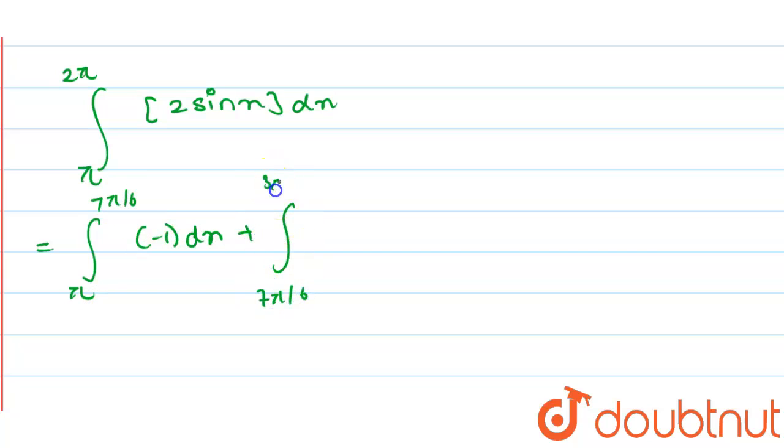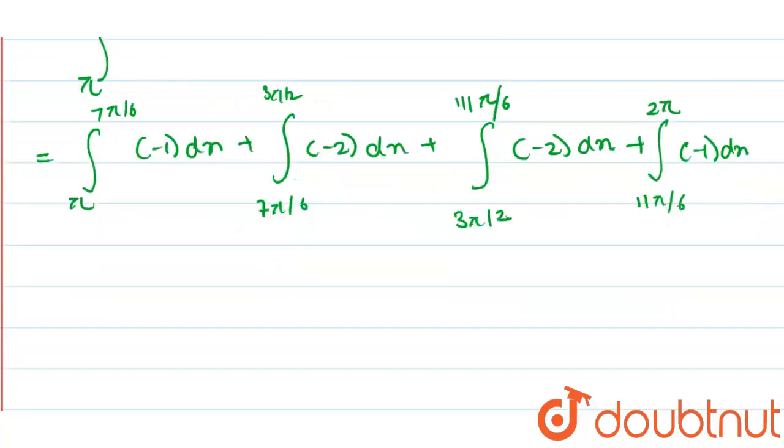Where you can write it as integration of pi to 7 pi by 6, minus 1 dx, plus 7 pi by 6 to 3 pi by 2, minus 2 dx, plus integration of 3 pi by 2 to 11 pi by 6, that is minus 2 dx, plus integration of 11 pi by 6 to 2 pi, which is again minus 1 dx here.